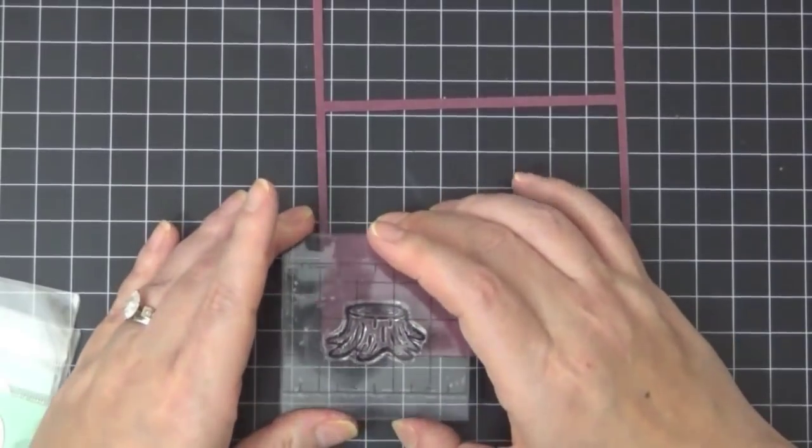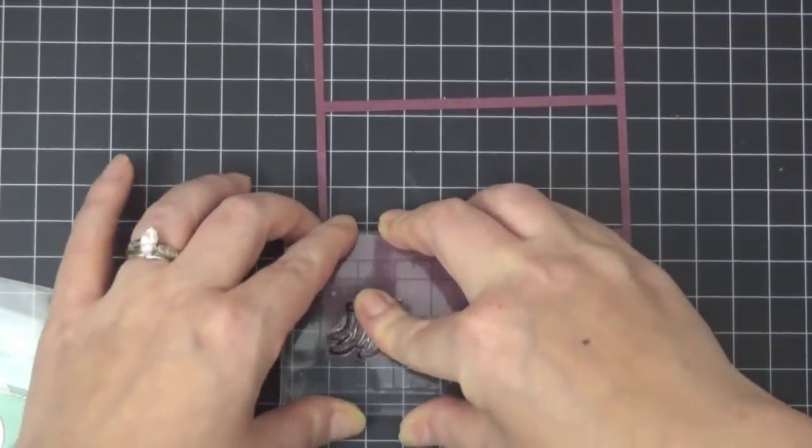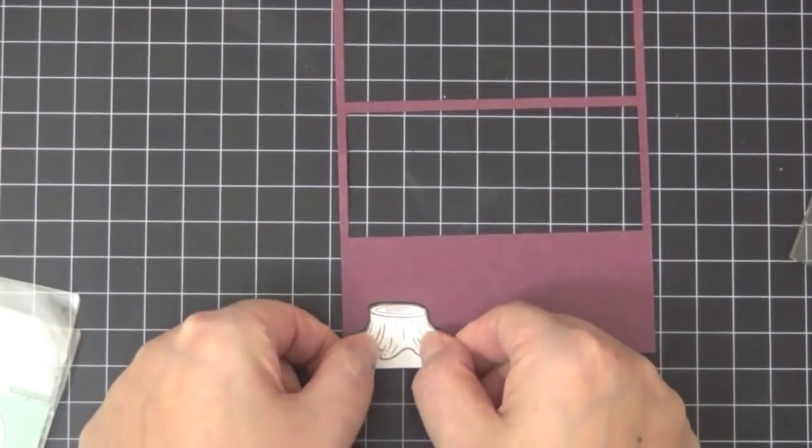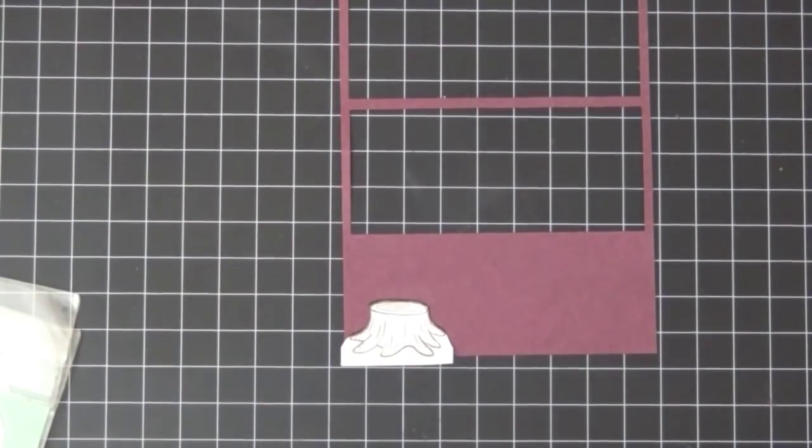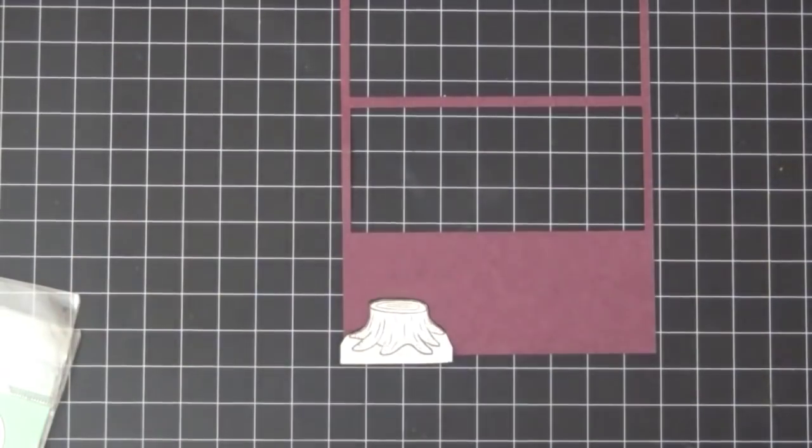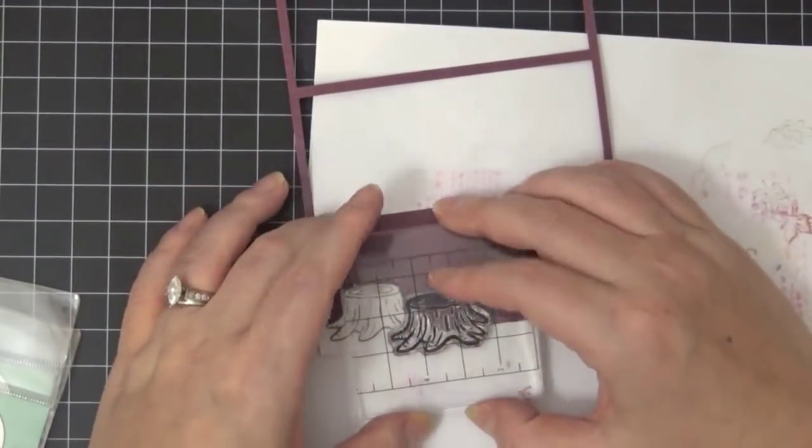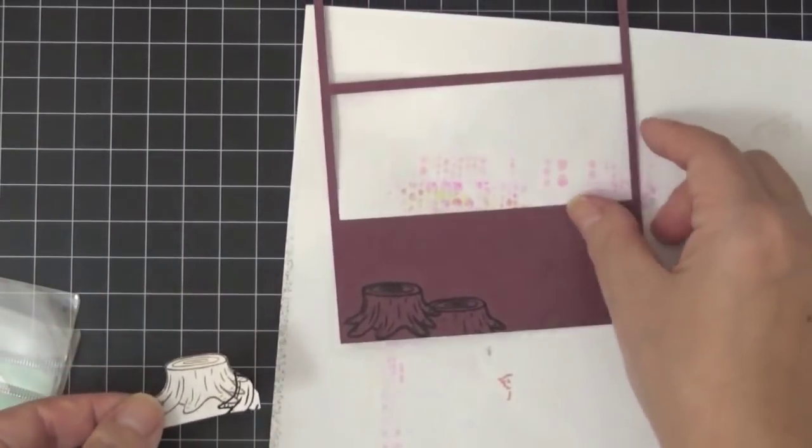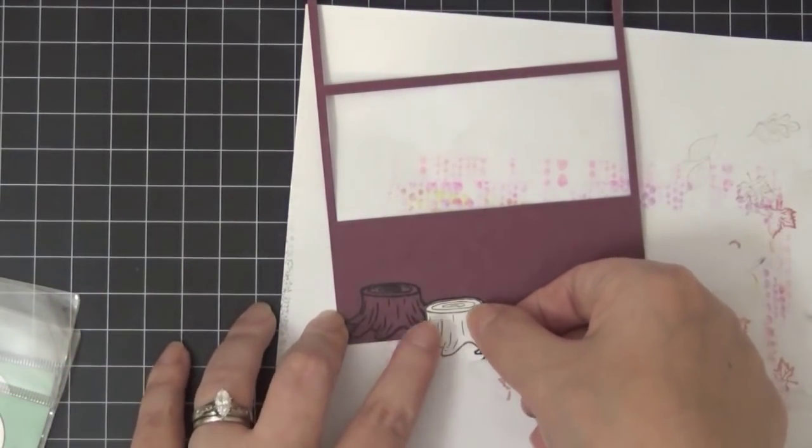So those rectangles were cut out using MFT's, I believe it's a panel stitch panel die. And here I'm stamping out the tree trunks. And I'm masking out the first tree trunk so that the other tree trunks look like they're behind the first one.